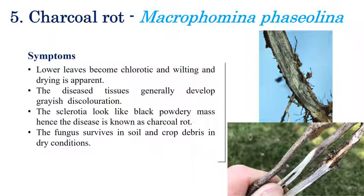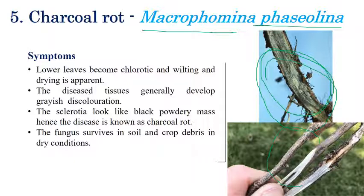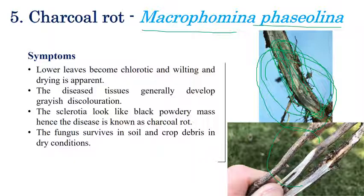The next disease is Charcoal Rot, caused by Macrophomina phaseolina. The name indicates rotting with a charcoal-like powdery appearance, especially in the root region. Symptoms include wilting of lower leaves and chlorotic lesions on leaves. On the stem, black coloured powdery masses and black discolouration can be seen when the stem is split open. Sclerotia are formed as resting structures. These sclerotia survive in soil during unfavourable conditions and serve as inoculum for the next season.